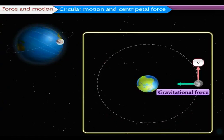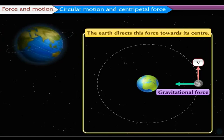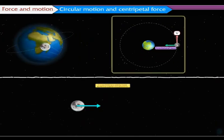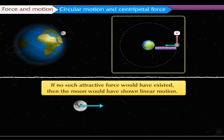A force is constantly exerted on the moon to make it revolve in a specific orbit around the earth. The earth directs this force towards its center. If no such attractive force would have existed, then the moon would have shown linear motion.